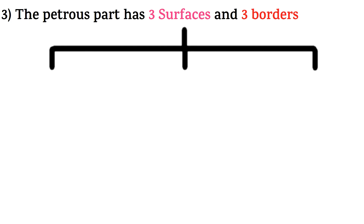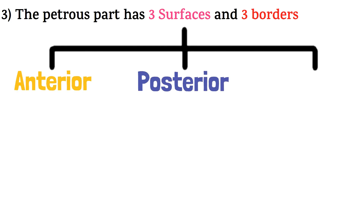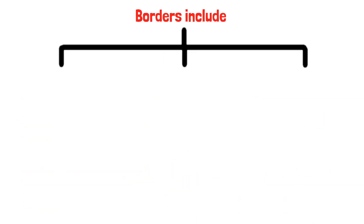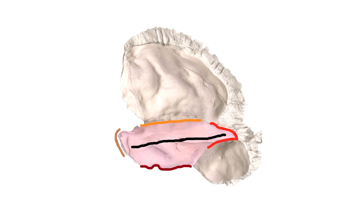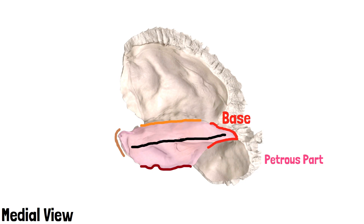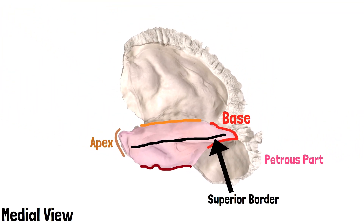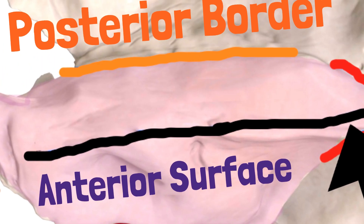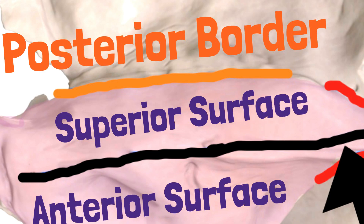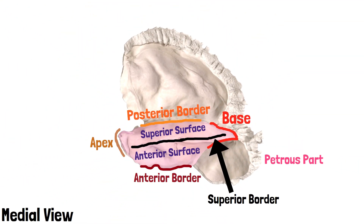The petrous part has three surfaces and three borders. The surfaces include the anterior surface, posterior surface, and the inferior surface. The borders include the anterior border, posterior border, and the superior border. In the medial view, the pink shaded part is the petrous part. The red outlined part is the base facing externally, and the light brown shaded part is the apex facing anteriorly. The black outlined part is the superior border, brown is the anterior border, and orange is the posterior border. The surface between the superior and anterior border is the anterior surface, and between the superior and posterior border is the posterior surface.